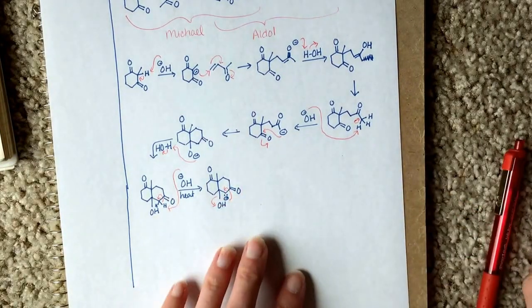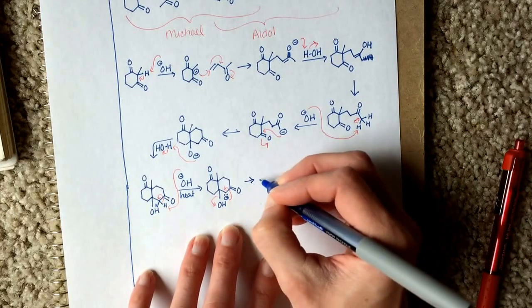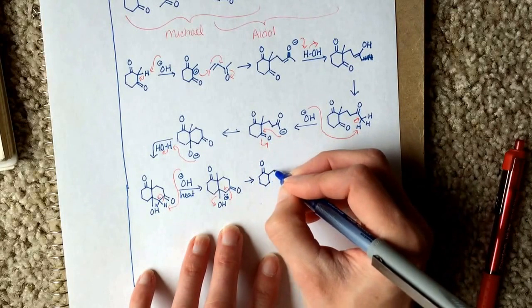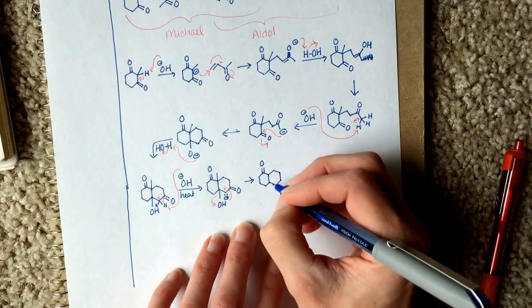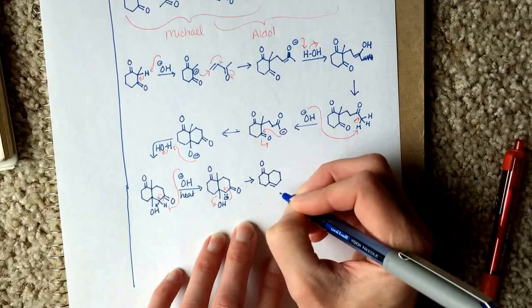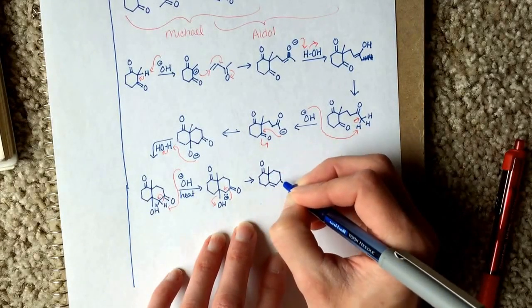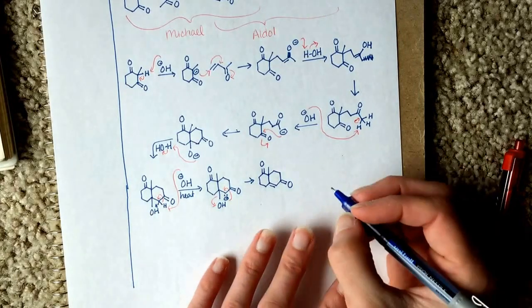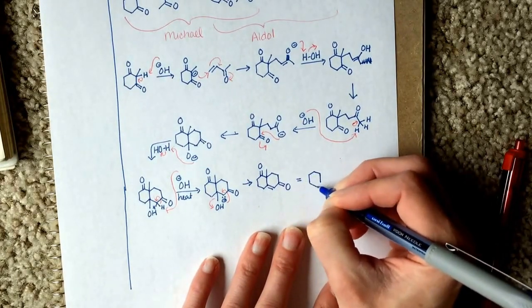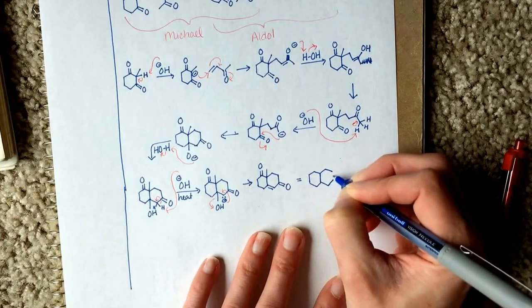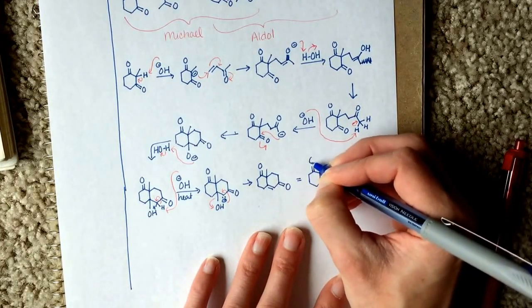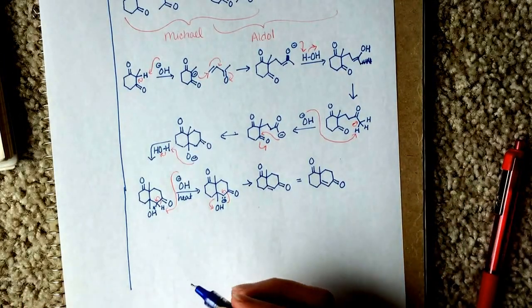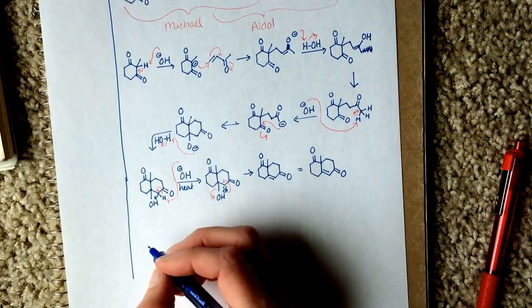We are going to move that lone pair of electrons up to make a carbon-carbon double bond and knock off an OH as a leaving group — which is okay because we're not creating a stronger base than what we already have in solution. So it's okay to have OH as a leaving group. New double bond. I don't think I've forgotten anything. There we go — that's the only Robinson annulation reaction we're going to look at.